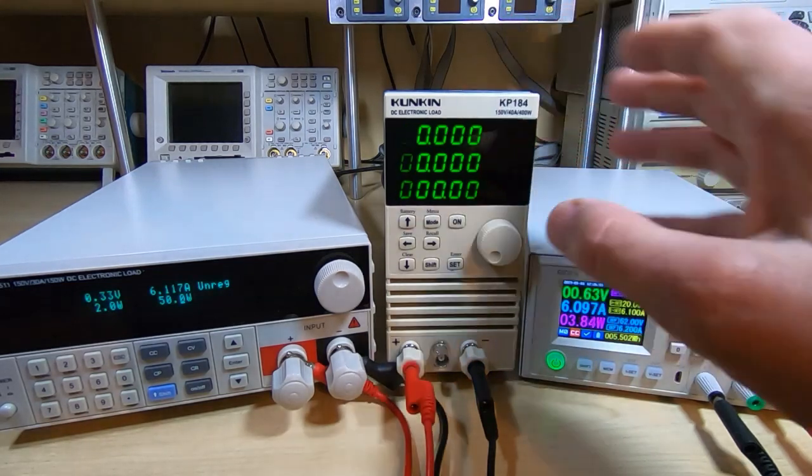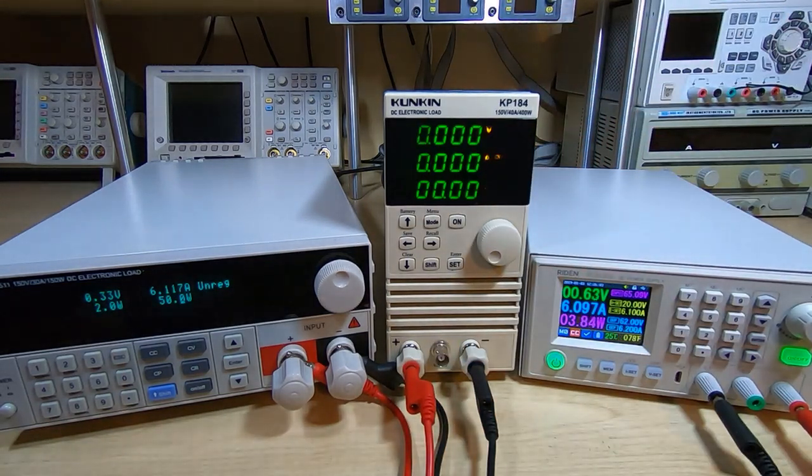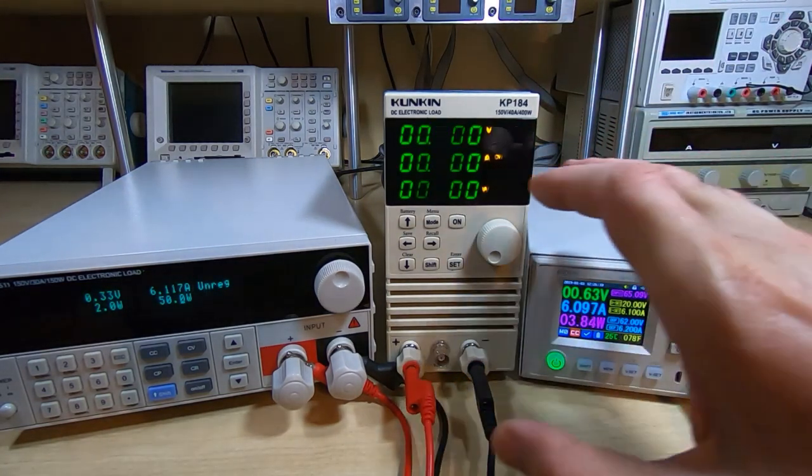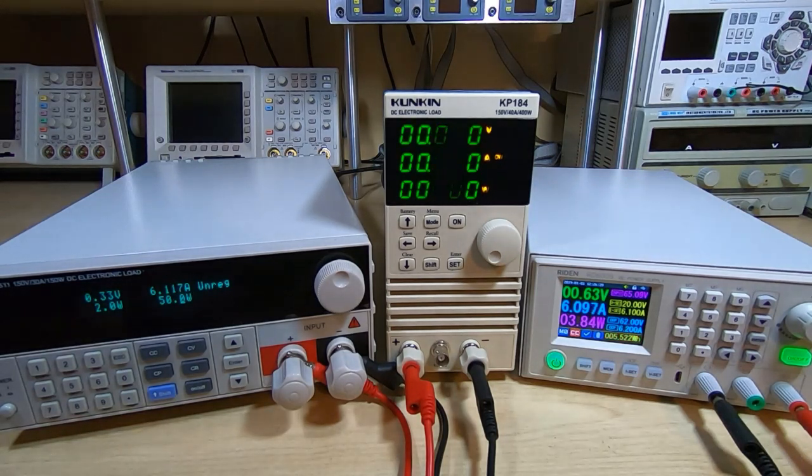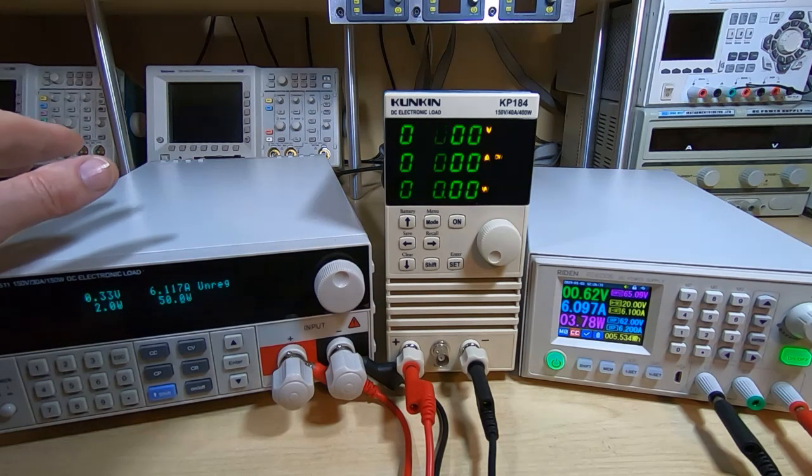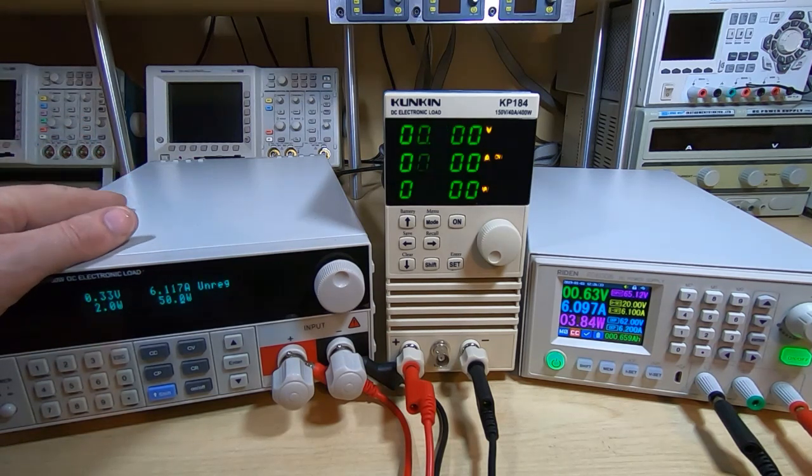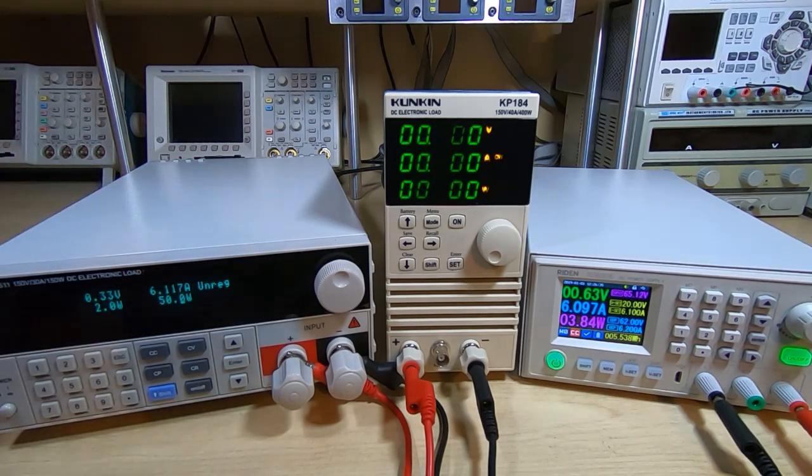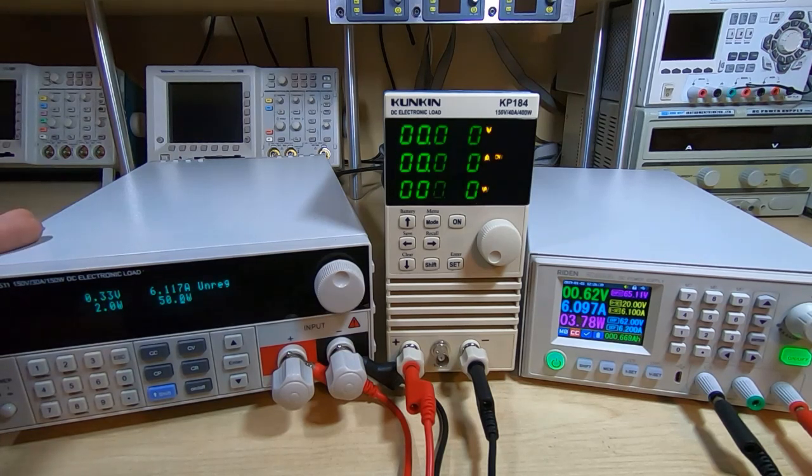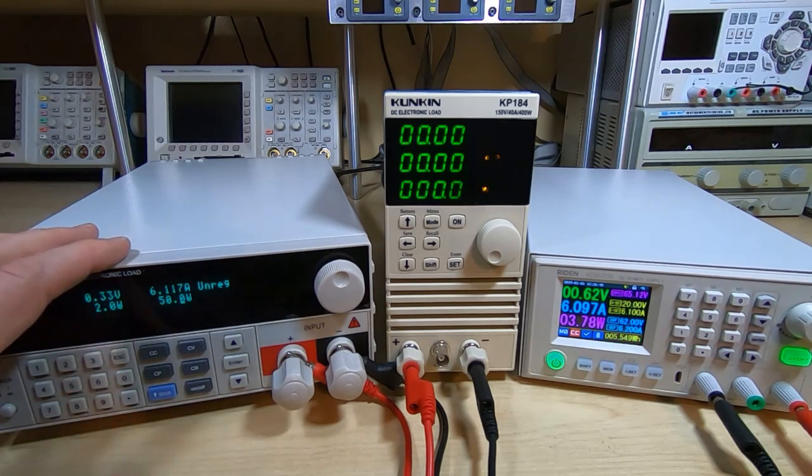If there's a setting on the load to counter that, all well and good, you can adjust it. But as long as you understand what it's doing and why it's doing it, then you may well be able to find a workaround. But that's where spending the extra money on an electronic load tends to pay off. They do tend to be much more stable. The firmware seems to be much more able to deal with transient situations, but they still operate in a very similar way.